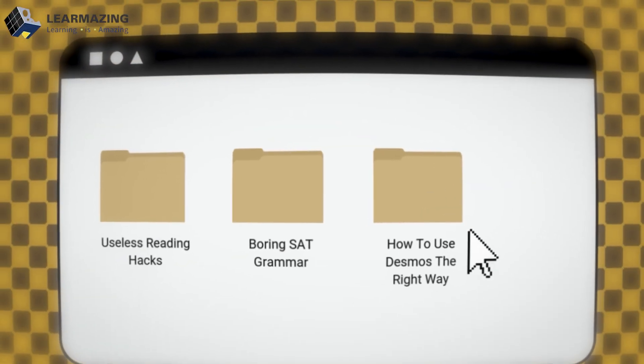Type 1 is pulling their hair out, trying to isolate b, thinking, oh, how do I even start? Type 2 opens Desmos, types in the equation and literally sees the answer in seconds. The difference? They understand how to leverage tools the right way. And that's what we're diving into next.